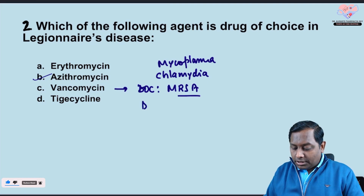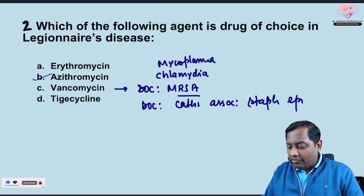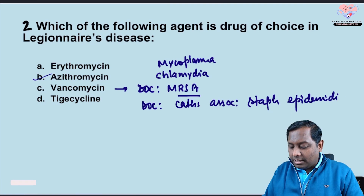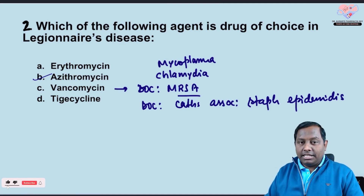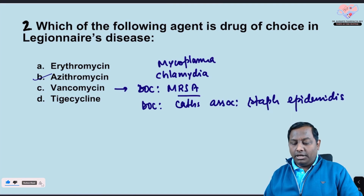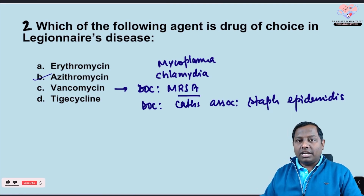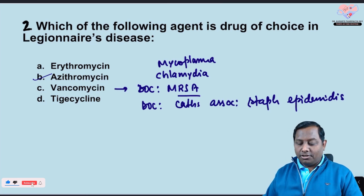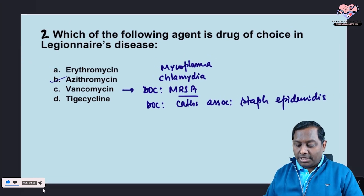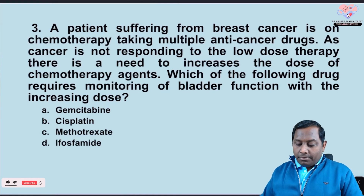Vancomycin is the drug of choice in a patient with methicillin-resistant Staphylococcus aureus (MRSA). It is also considered the drug of choice for catheter-associated Staph epidermidis infection. Tigecycline is a derivative of minocycline from the tetracycline group — it can be used in MRSA and VRSA, but it is not the drug of choice in Legionella disease. The drug of choice here is azithromycin.